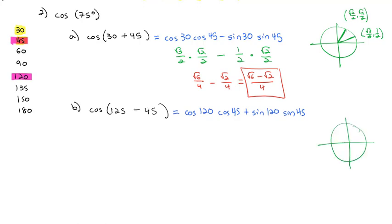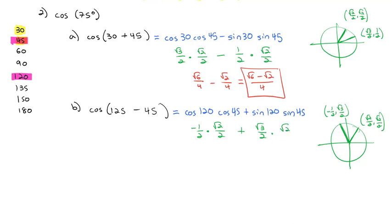Setting up our unit circle: 120 degrees has a short negative x-coordinate of negative 1 half and a tall y-coordinate of root 3 over 2. The 45-degree angle is still root 2 over 2, root 2 over 2. Plugging this in: cosine of 120 is negative 1 half, times cosine of 45, root 2 over 2, plus sine of 120, root 3 over 2, times sine of 45, root 2 over 2. Multiplying gives negative root 2 over 4 plus root 6 over 4, which is root 6 minus root 2 over 4 — the exact same answer, whether we did it as a sum or a difference.